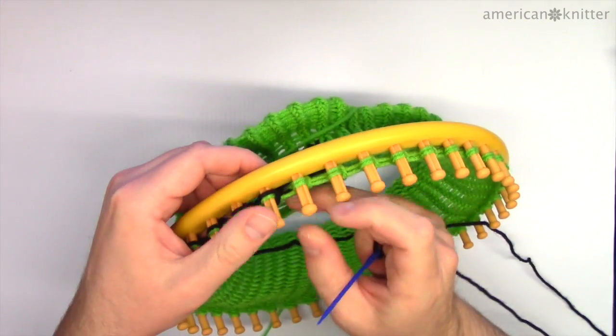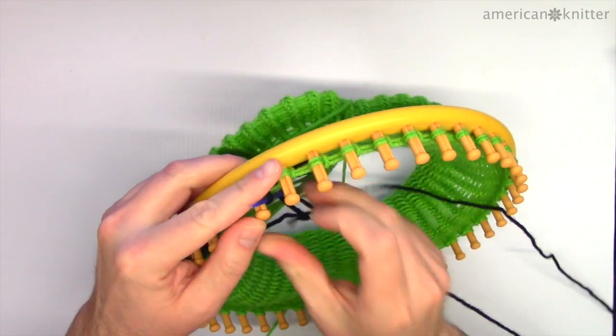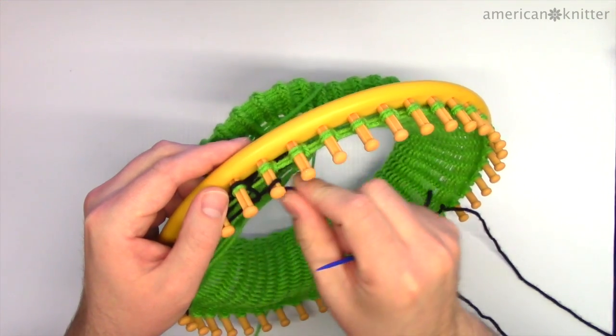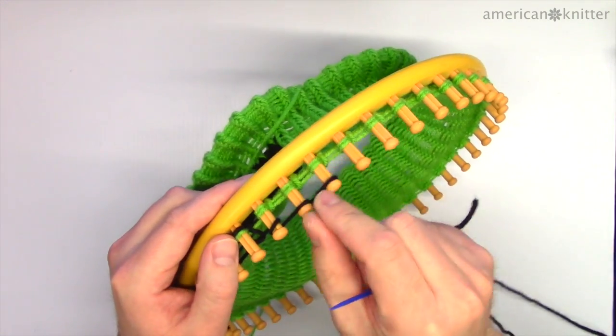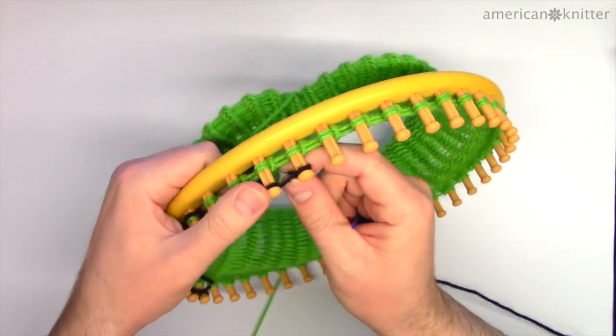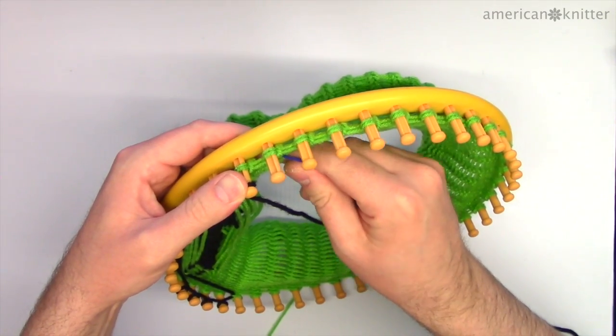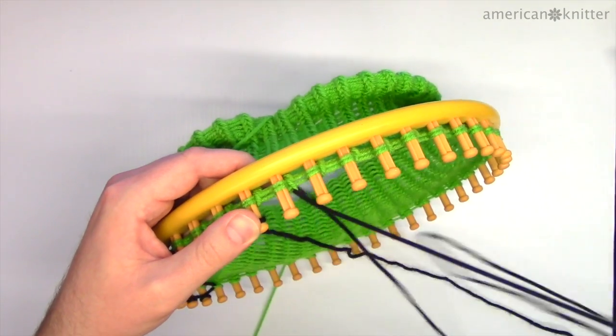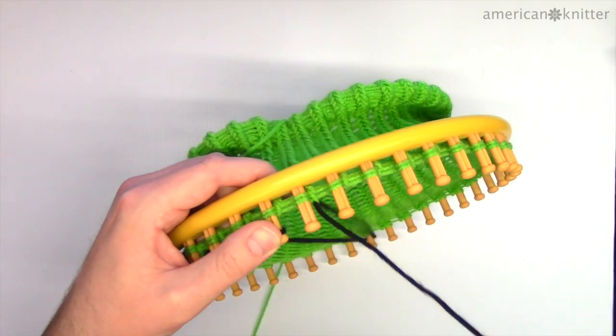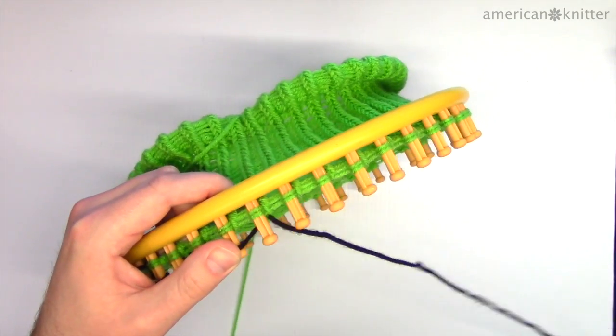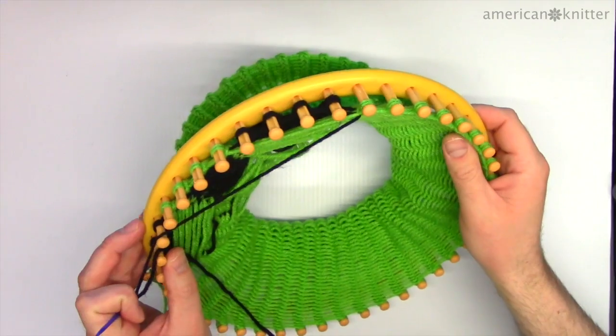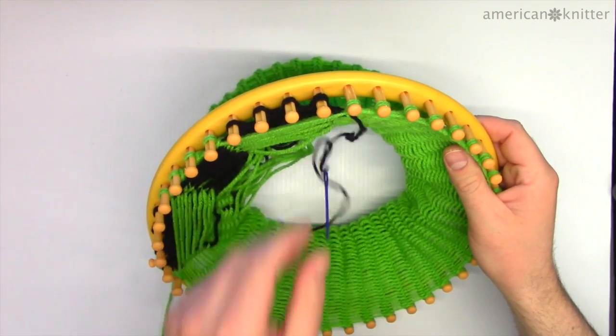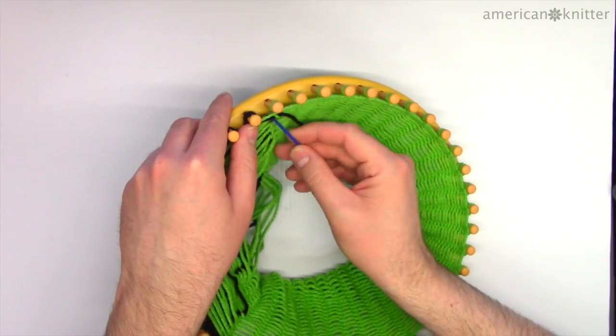Secure the black yarn to the green stitch on peg number 8. Then wrap pegs 9 through 12. Secure the yarn to the green stitch on peg 13. Continue adding 11 rows in this way and we'll be ready for the next step. With the 11 rows of yarn added to the beanie, it should look like this. You can now tie off the black yarn.